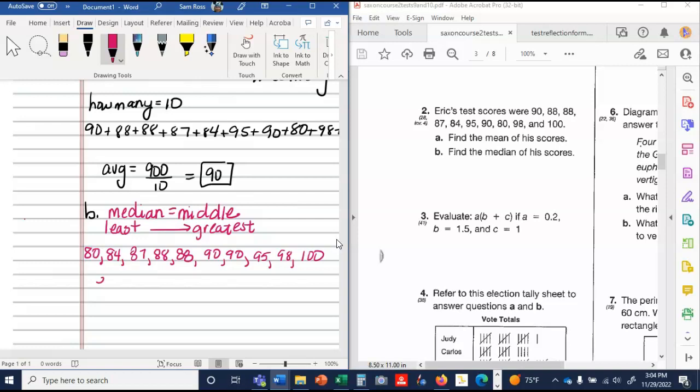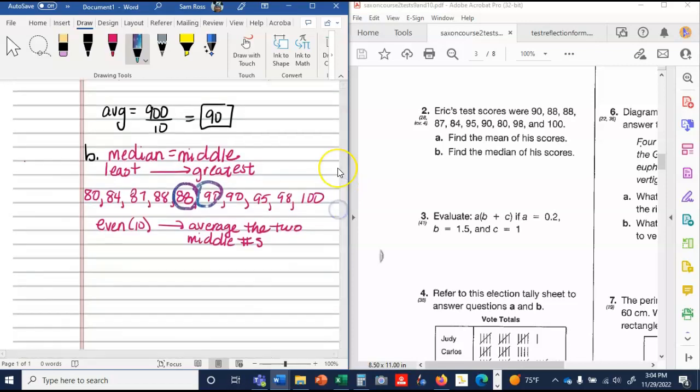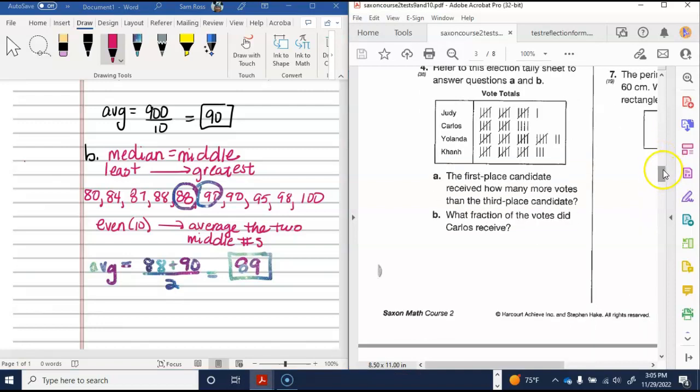And when you have an even number, so we have 10, you have to average the two middle numbers. And you should write literally all of this down. So if I start here and I go 1, 2, 3, 4, 5, I circle that. 1, 2, 3, 4, 5, I circle that. So I'm going to average 88 plus 90 over 2, which gives me 89. Make sure you get all of that down. Make sure you write all of that down. Make sure you don't just write 89 down.